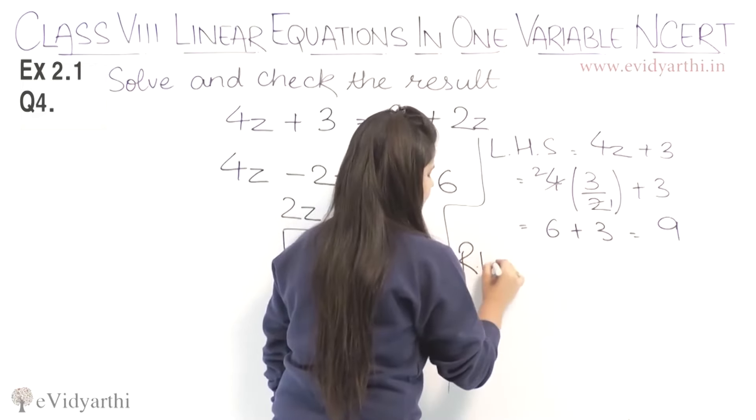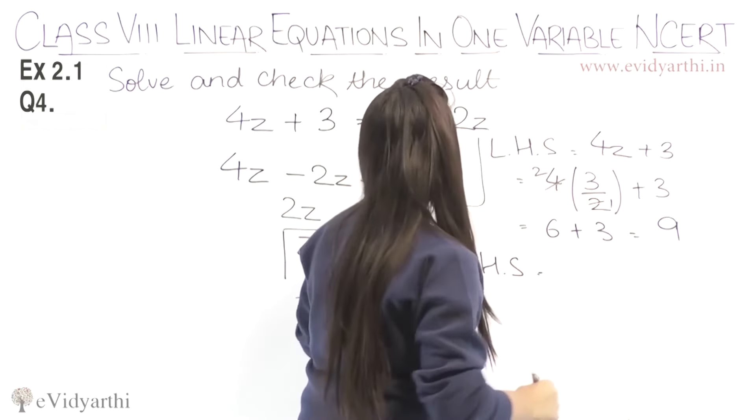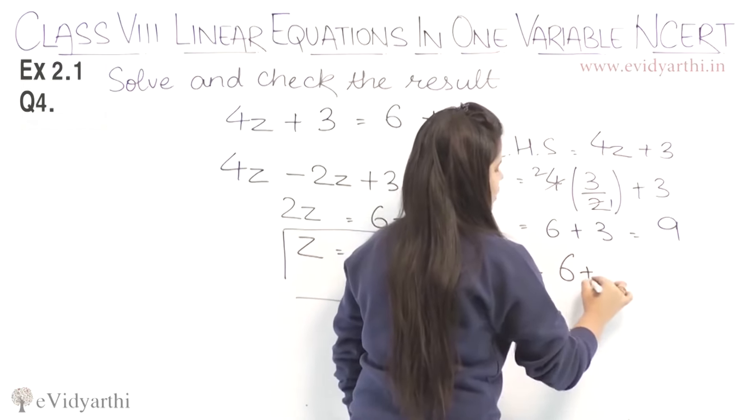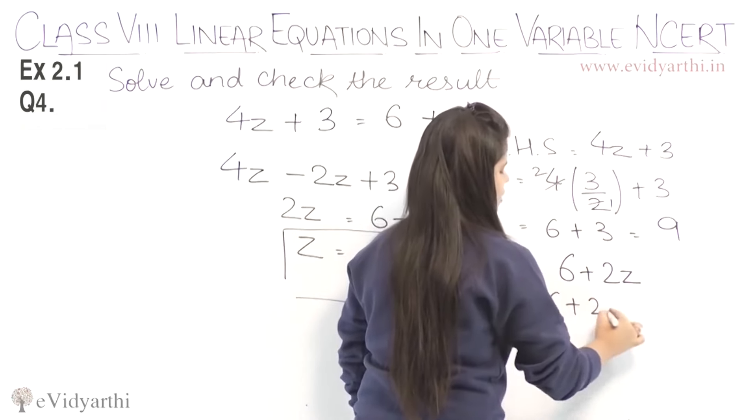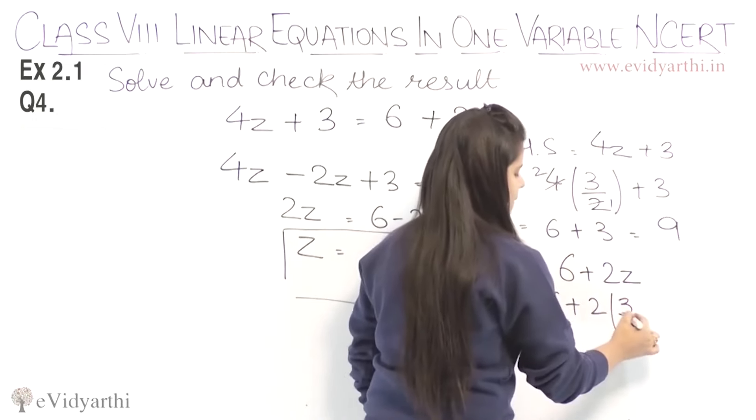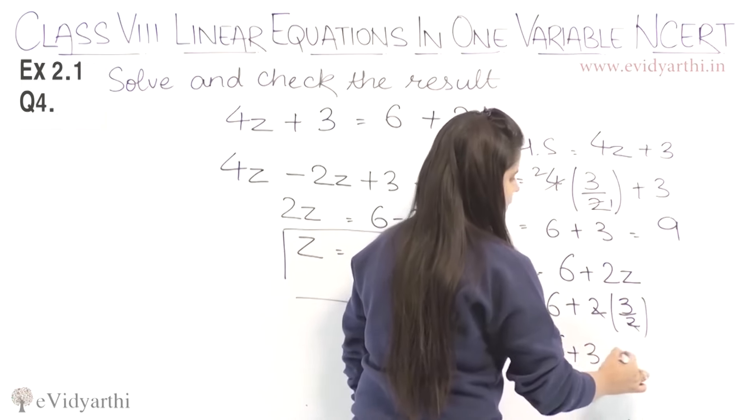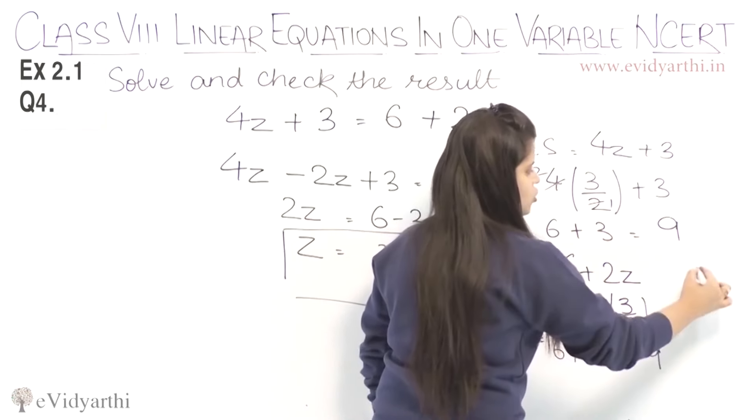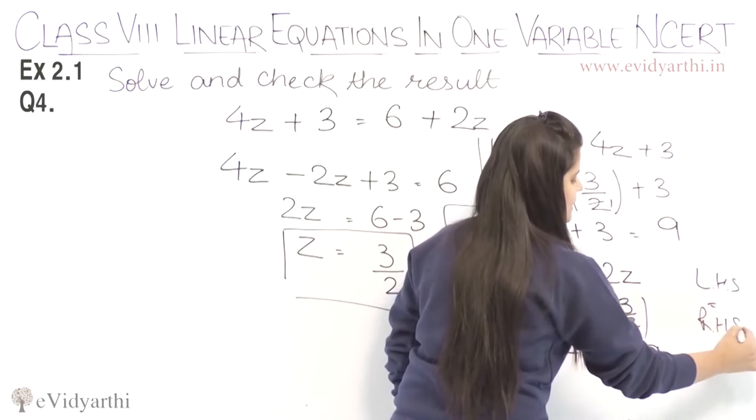Now, moving to the right-hand side. We have 6 plus 2z. Substituting z equals 3 upon 2, we get 6 plus 2 times 3 upon 2, which equals 6 plus 3, equals 9. Again, left-hand side is equal to the right-hand side.